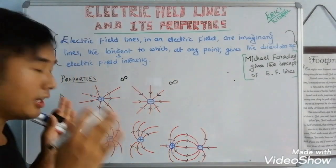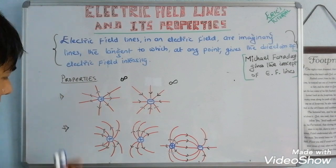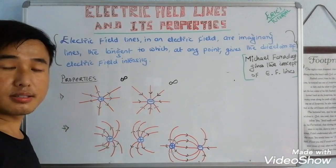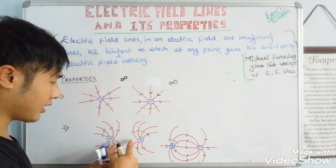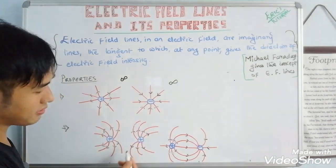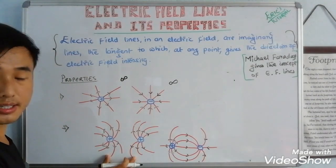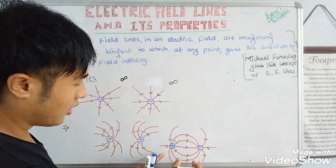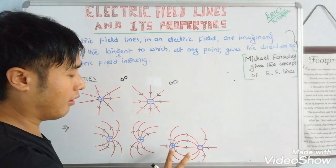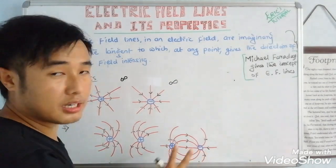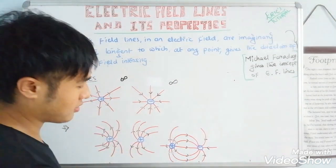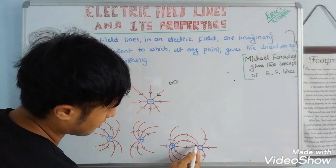Property number two: whenever we place like charges, the electric field lines show a repelling nature. When we have two charges opposite in nature, the electric field lines show an attractive nature — going from positive to negative.